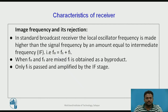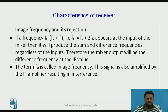Image frequency and its rejection: in a standard broadcast receiver, the local oscillator frequency is made higher than the signal frequency by an amount equal to the intermediate frequency — that is, F0 = FS + FI, or FI = F0 − FS. When F0 and FS are mixed, FI is obtained; only FI is passed and amplified by the IF amplifier stage. If a spurious frequency FSI appears at the mixer input, it also produces a difference equal to the IF value. This spurious frequency FSI is called the image frequency, and it is also amplified by the IF amplifier, resulting in interference.